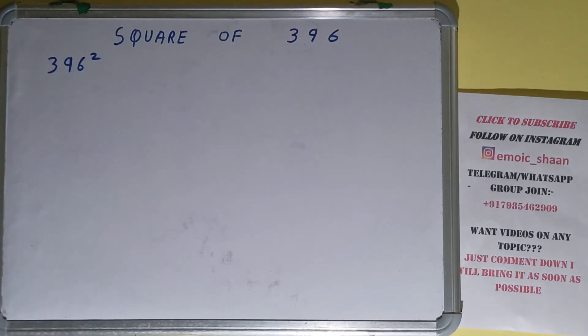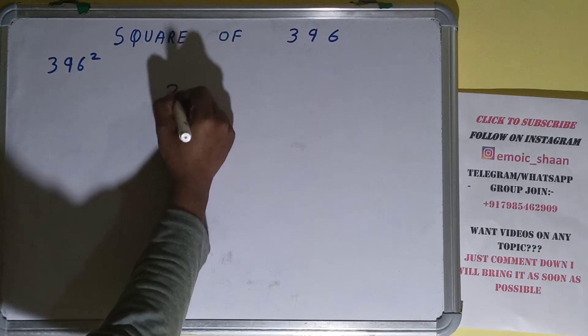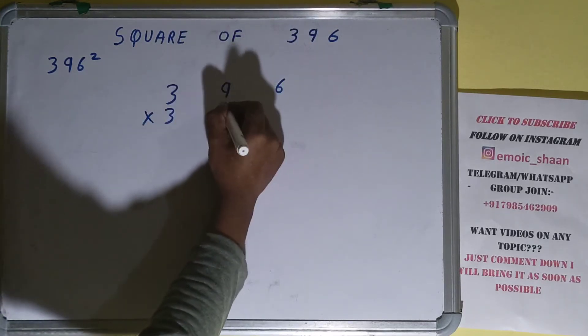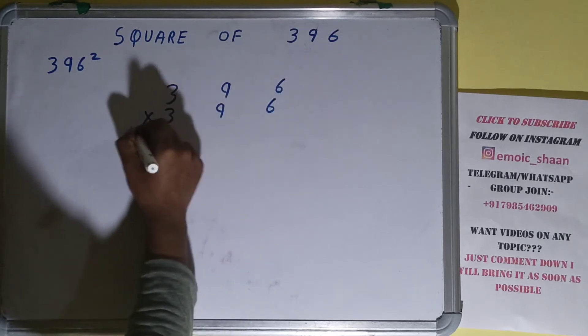power 2. Now coming on to the solution, square basically means multiplying the number by itself, and the number here is 396. To find square of it, we need to multiply by itself, that is 396, and do the